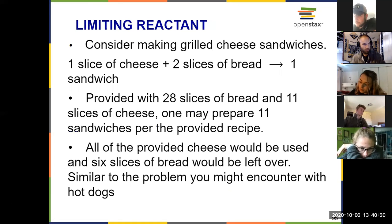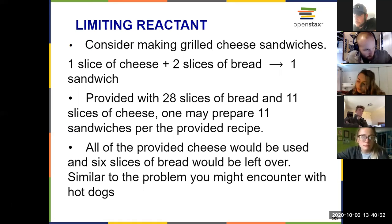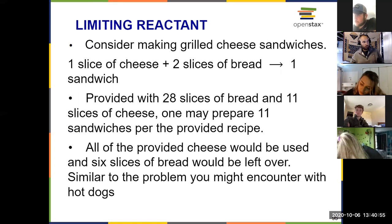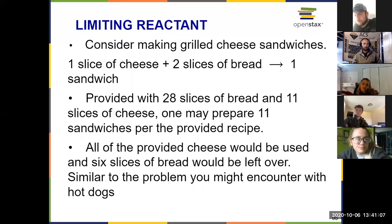So the example that your textbook uses to illustrate limiting reactant is making cheese sandwiches with a very questionable lunch decision. One slice of cheese and two slices of bread to make one sandwich. So in a theoretical situation where we have 28 slices of bread in a loaf and 11 slices of cheese, then we're capped at making 11 sandwiches following that recipe, that stoichiometric ratio of cheese to bread.